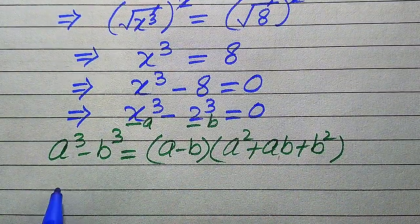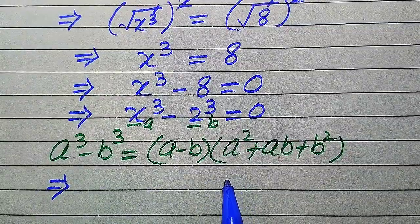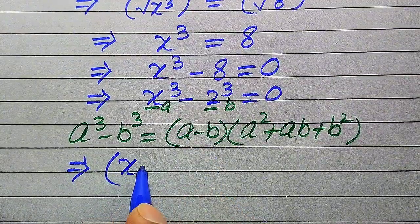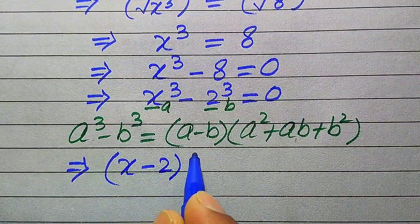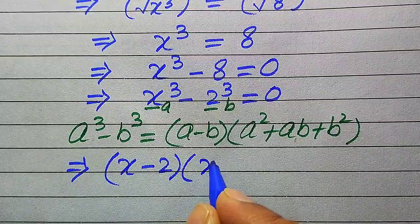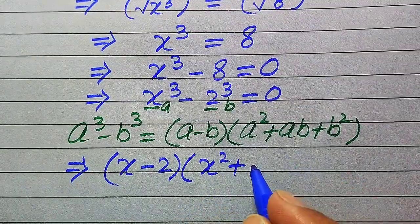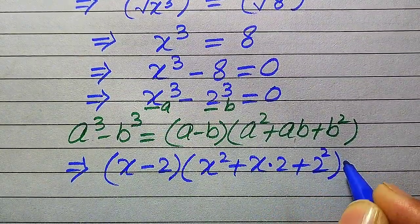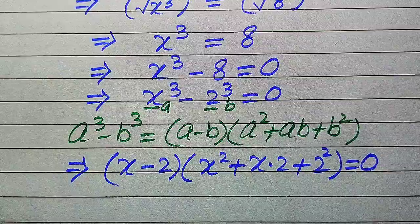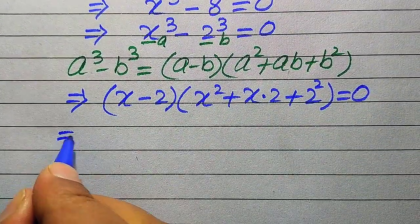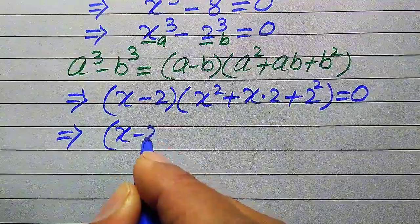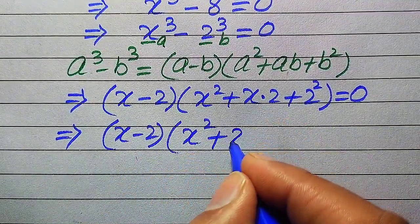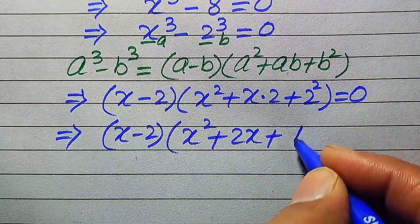We substitute the values of a and b into the right-hand side of this formula. After substituting, it becomes (x minus 2)(x squared plus x·2 plus 2 squared) equals 0, which simplifies to (x minus 2)(x squared plus 2x plus 4) equals 0.